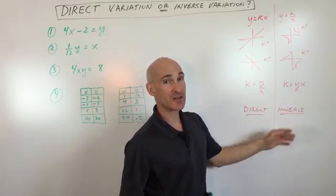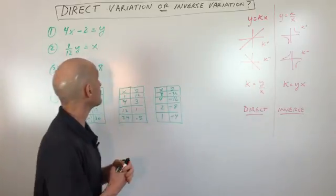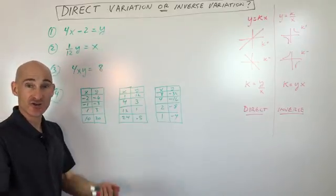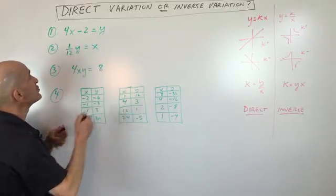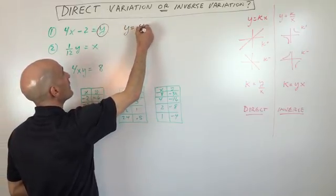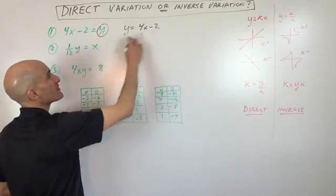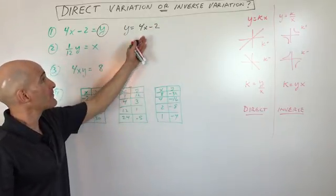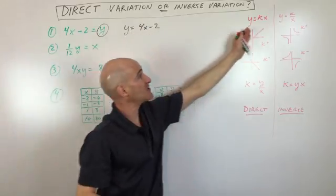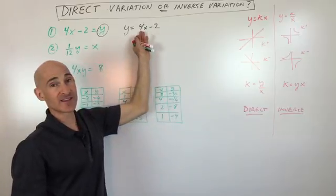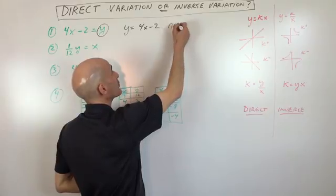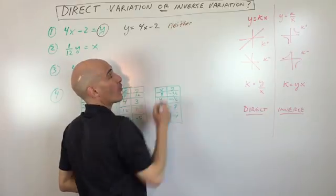Let's get into some examples. Say they give you 4x minus 2 equals y — is that direct or inverse? Isolate the y: y equals 4x minus 2. If it was just y equals 4x, it would be direct with k equal to 4. But because the negative 2 is there, this is actually neither direct nor inverse.